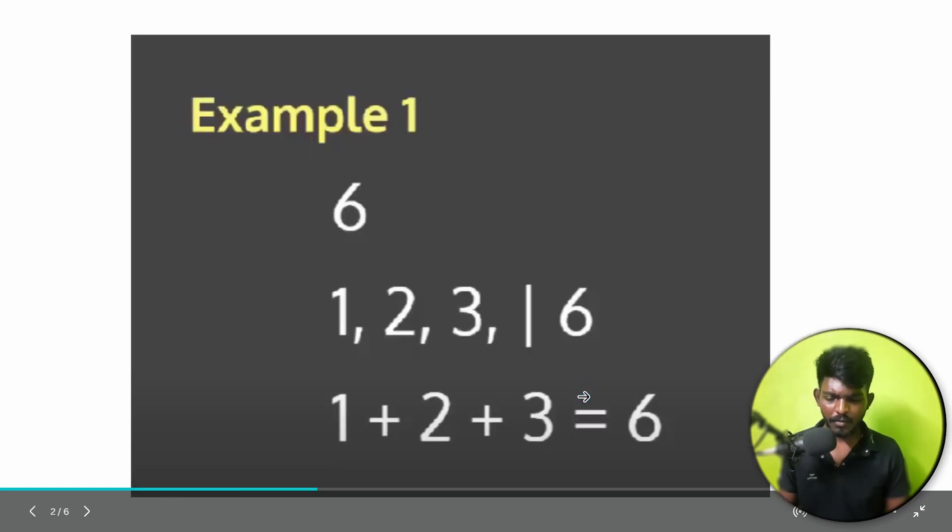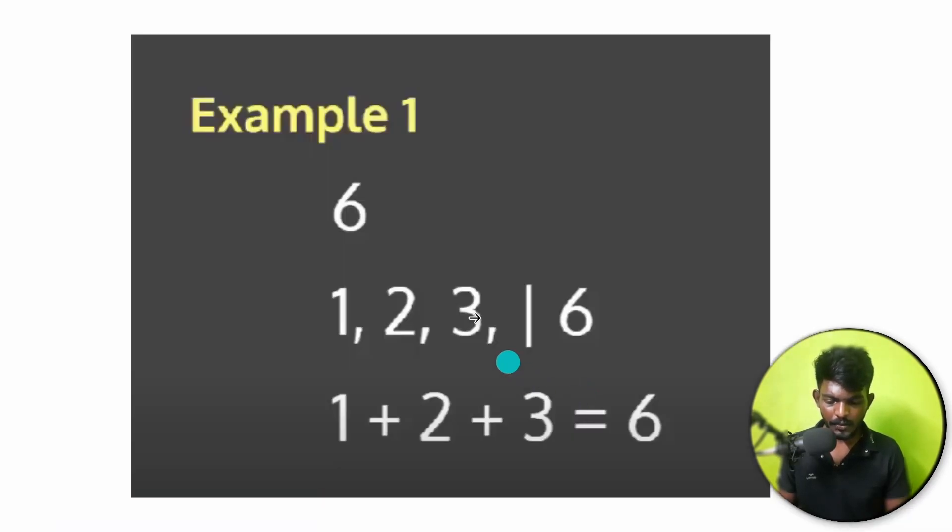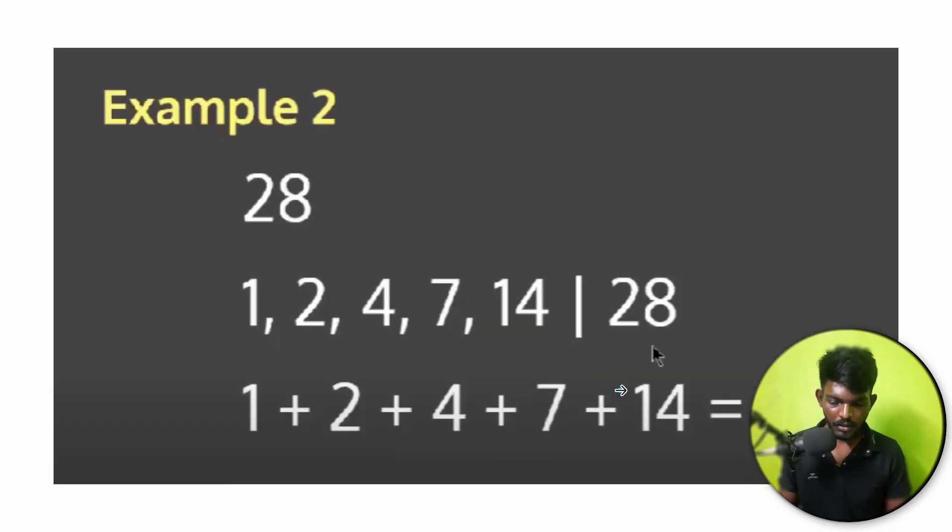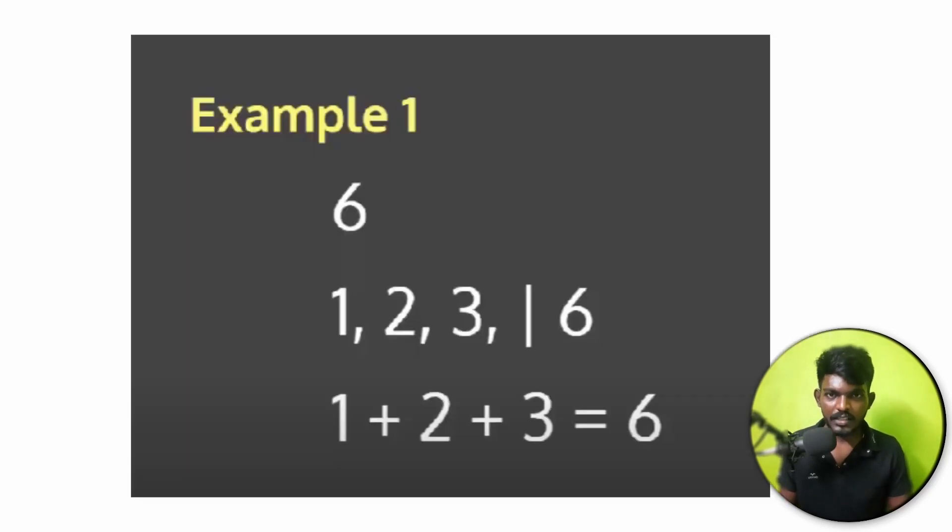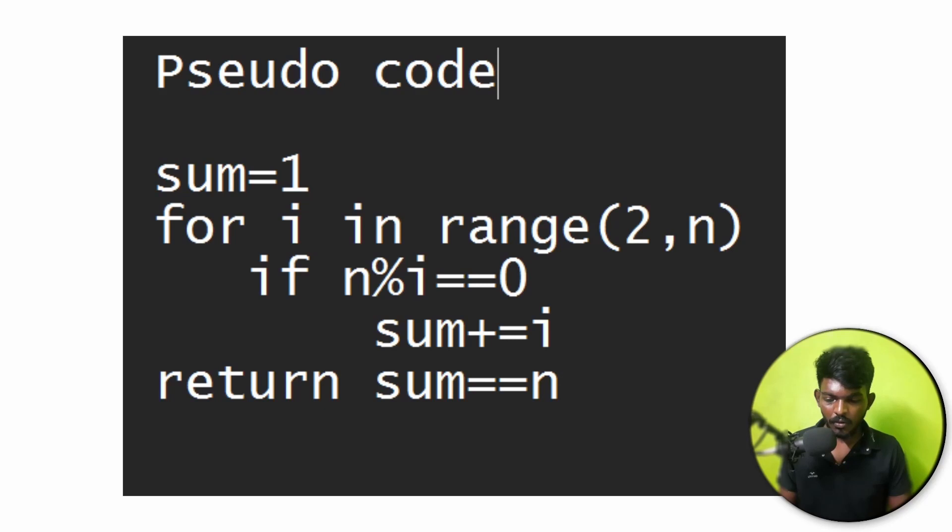Another perfect number is 6. The divisors are 1, 2, 3. So here's the perfect number. It's a tricky question. The problem is very easy, it's very simple.